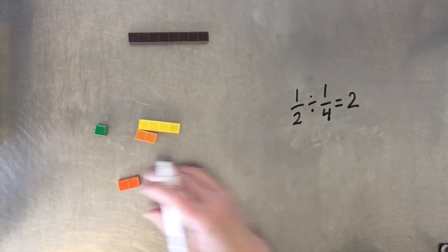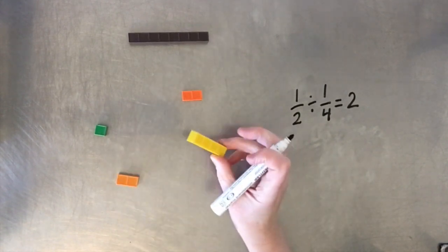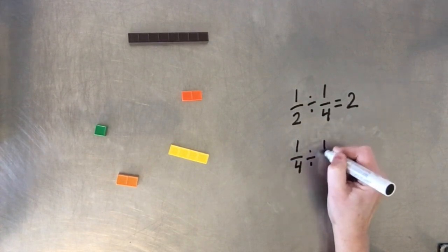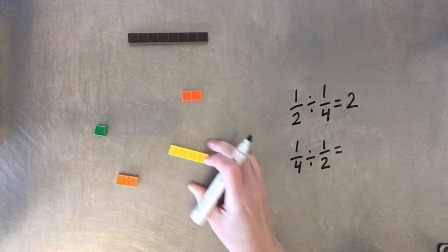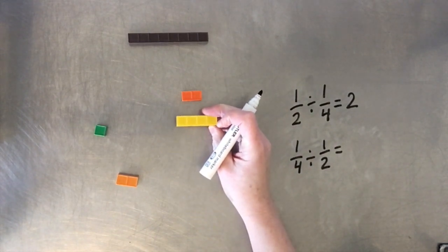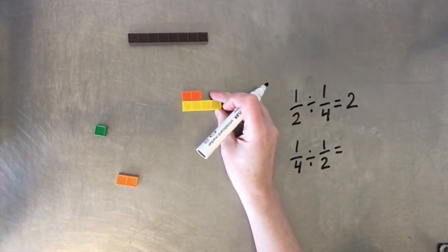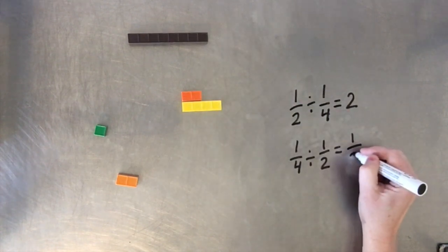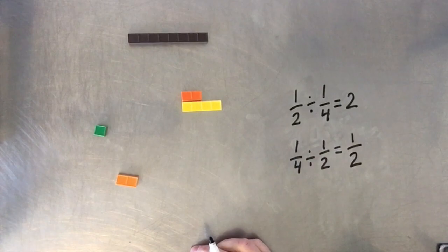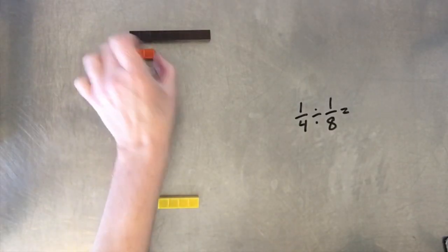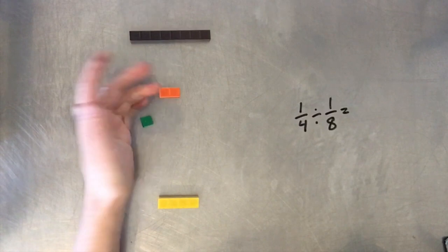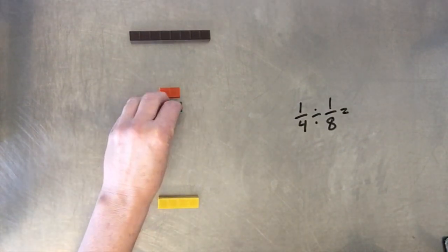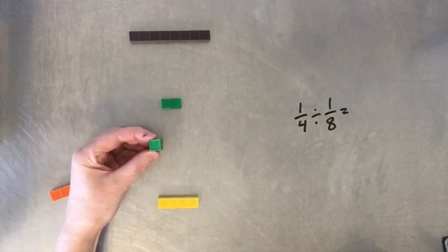What if we took a smaller one and said: how many of these fit into there? So that would be one-fourth divided by one-half — how many halves fit into here? Well, only half of this fits into there. You can change this so that they have like denominators, the same kinds. One-fourth is the same as two-eighths — how many eighths fit in there? Two.